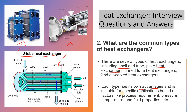Heat exchangers find applications in various industries including HVAC — heating, ventilation, and air conditioning systems — refineries, fertilizer plants, chemical industries, power plants, chemical processing plants, refrigeration systems, and automotive engines. For example, a car radiator is also a type of heat exchanger. They are crucial for heat recovery, temperature control, and energy conservation.